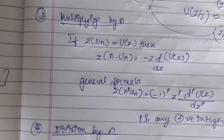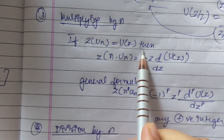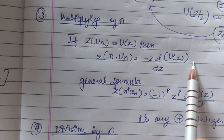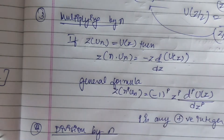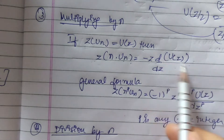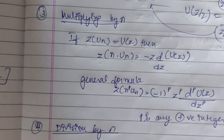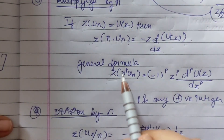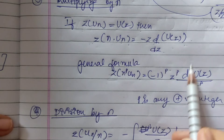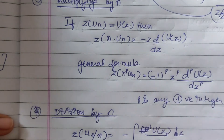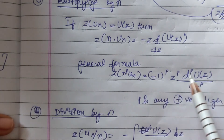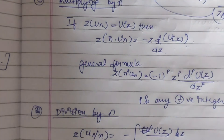The next property is multiplication by n. If Z{u(n)} = U(z), then Z{n·u(n)} = −z · d/dz [U(z)]. This is the recurrence formula we have already studied. The general formula is Z{n^p · u(n)} = (−1)^p · z^p · d^p/dz^p [U(z)], where p is the number of differentiations you have to perform on the function. For example, if p = 2, you double-differentiate your function.